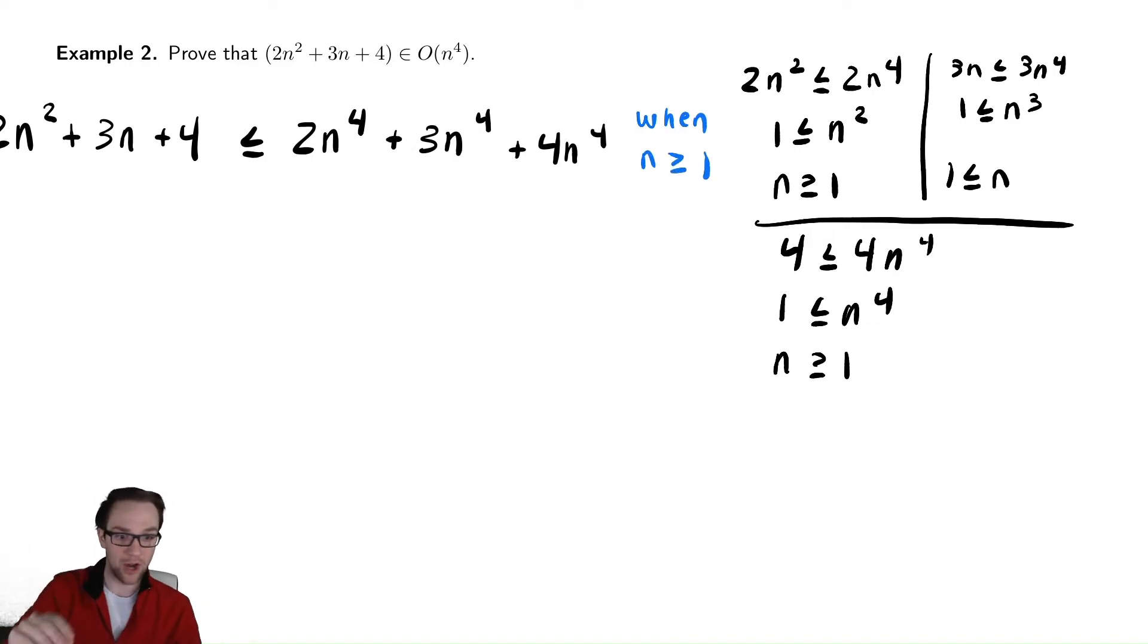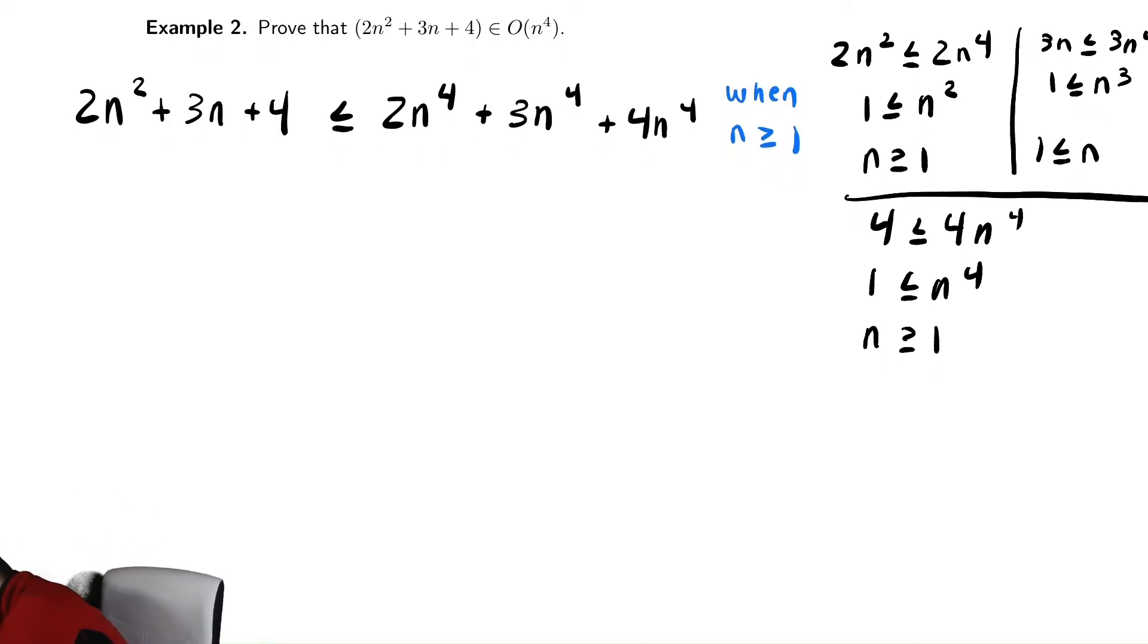When n greater than or equal to 1. That tells us our n naught, the eventually we are trying to capture with our notation. So we've shown that the given function, 2n squared plus 3n plus 4 is less than or equal to some constant, in this case 9, n to the fourth. That means that we've shown that it is in big O of n to the fourth, because we bounded it above by a number times n to the fourth, eventually.